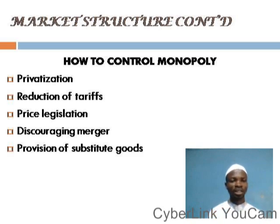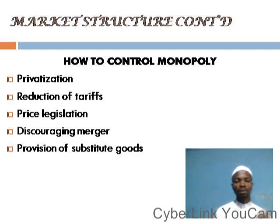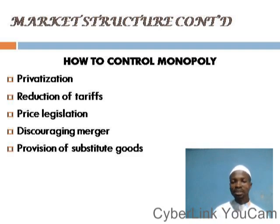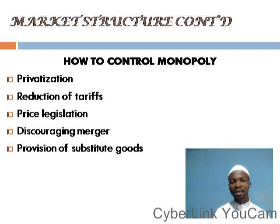Another way of controlling monopoly is through reduction of tariffs. Tariffs are taxes levied on imported and exported commodities — hence we have import tariffs and export tariffs. Through reduction of tariffs, government can control monopoly power by reducing tariffs on goods imported from other countries that serve as close substitutes to those provided by monopolies within the country. If that is done, more importers will be encouraged to bring in such substitutes, thereby limiting and reducing the power of monopolies.